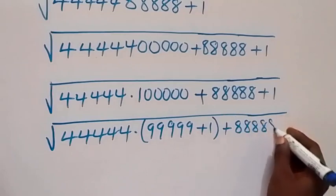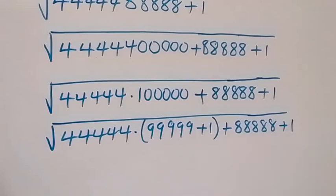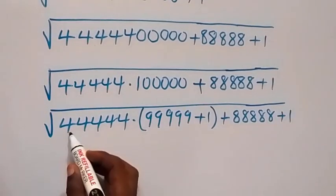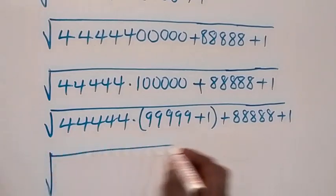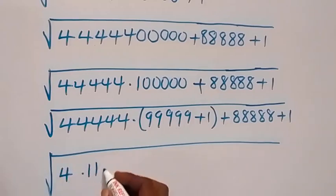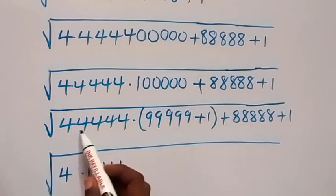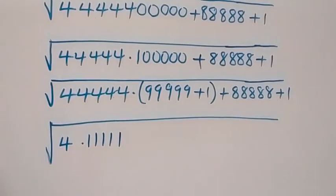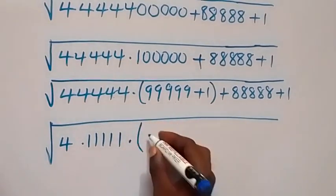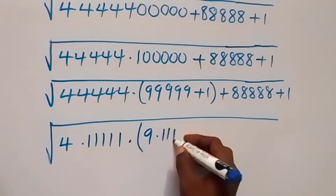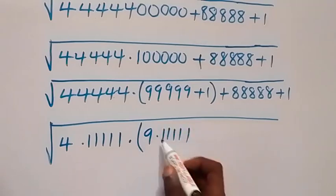...111111 — eight 1s — plus 1. In the next step we can also write this as square root of 4 multiplied by 11111 — five 1s — which still gives us back 44444. From here, times 9 times 11111 — five of them — which also gives us back 99999.